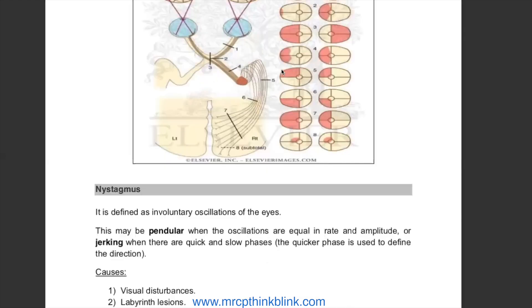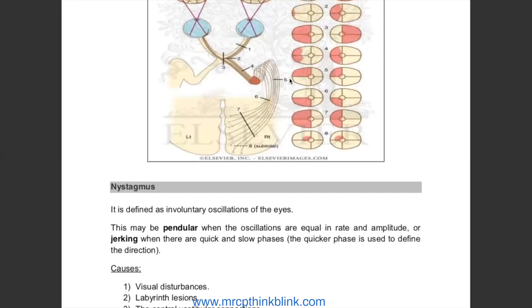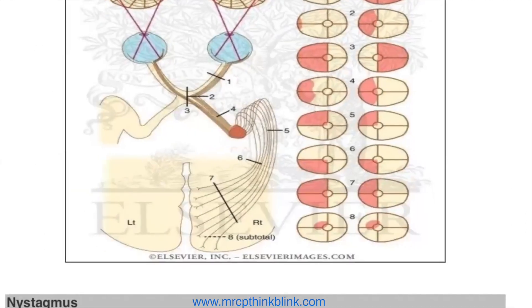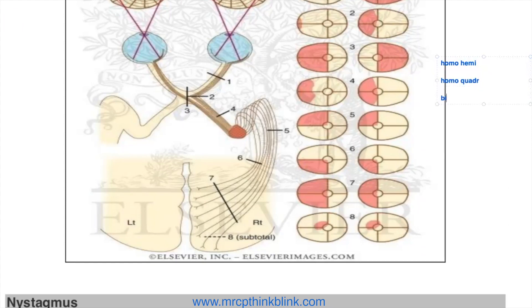This will be our last topic. This one is our visual field effect — let me write some clues. So first: homo, hemi, homo quadrant, bitemporal. These are my clues for the visual field defects we will cover.